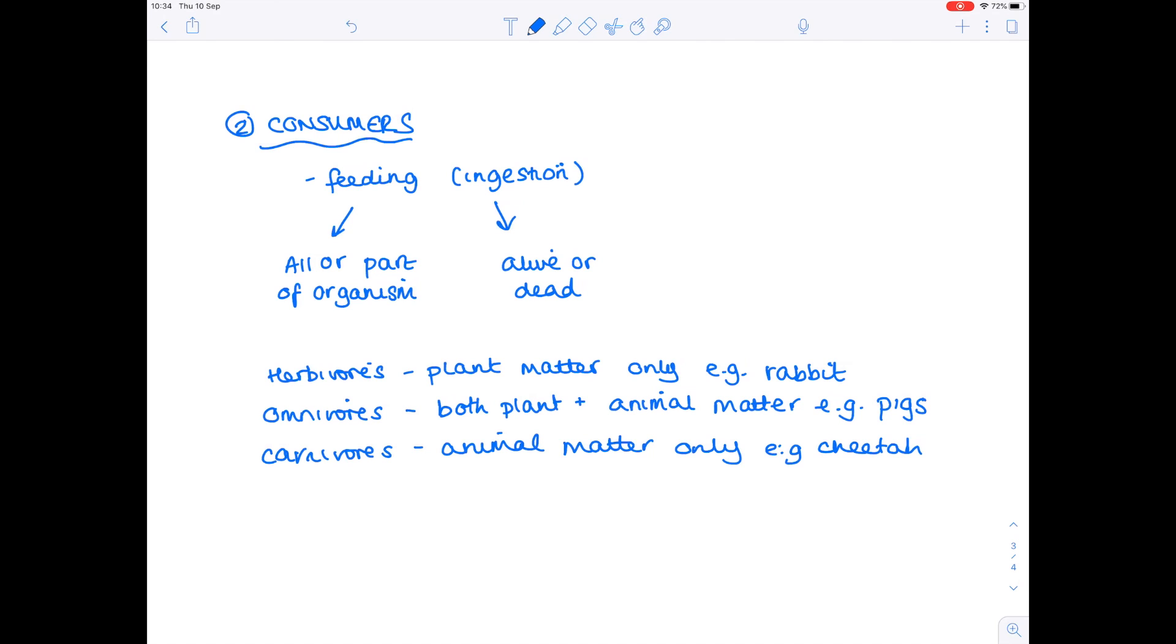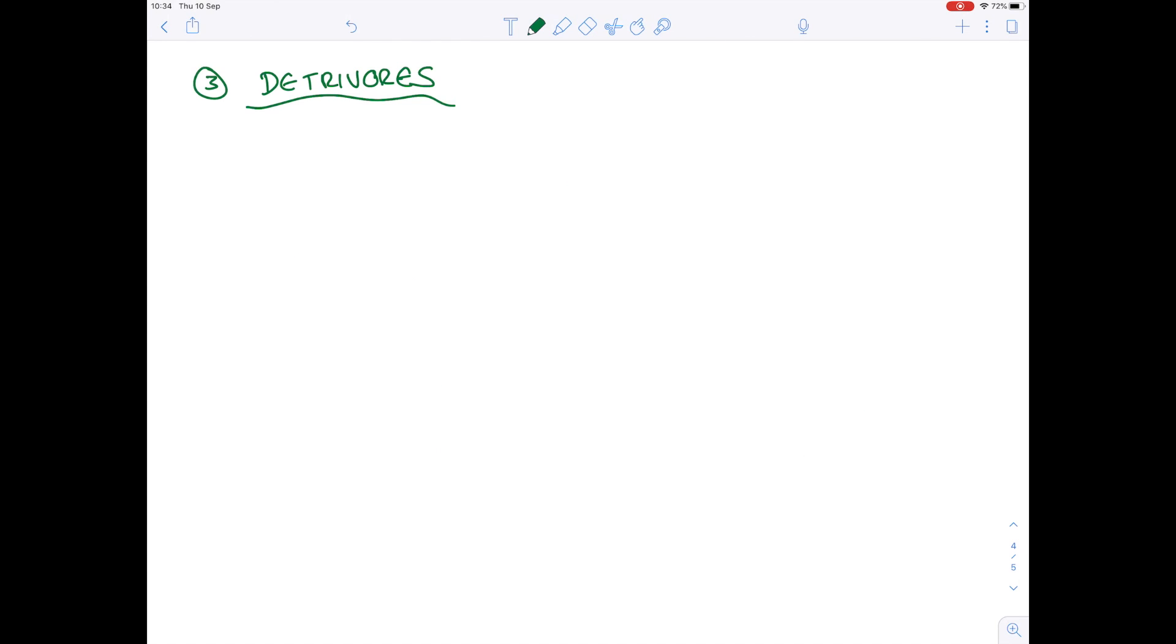Notice that alive or dead comment I made. A good example of an animal which eats dead matter only is a vulture. Remember, it's a scavenger, so it only eats carrion. Lastly, the detrivores. Now, detrivores notice that they obtain organic nutrients, so ones containing carbon, from dead material.